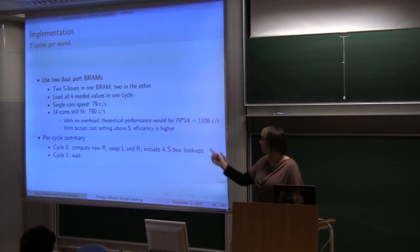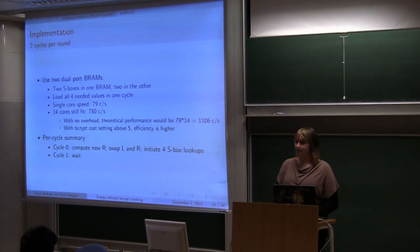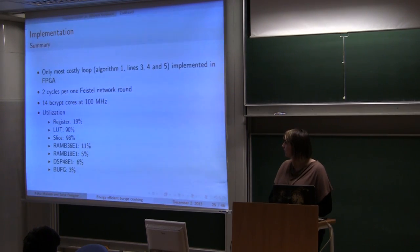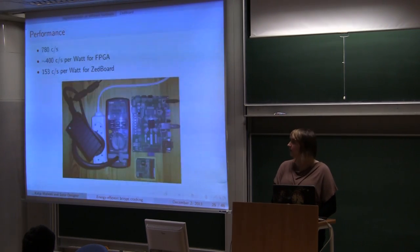In theory this would give this number for performance. But there are overheads of actually computing part of Bcrypt hash on ARM processor. Because only 2 to the power of cost loop is implemented in FPGA. In total this works for two cycles for Feistel network round. And the cores run at 100 MHz. And here we have overview of utilization. There are BRAMs.